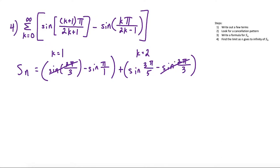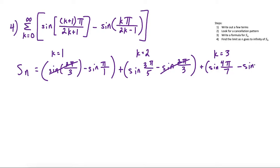It looks like when we introduce the next term, the first term and the last term cancel. At k equals 3, we have sine of 4π over (2·3 plus 1) = sine of 4π/7, minus sine of 3π over (2·3 minus 1) = sine of 3π/5. So sure enough, sine of 3π/5 cancels with the previous term.